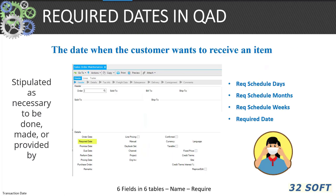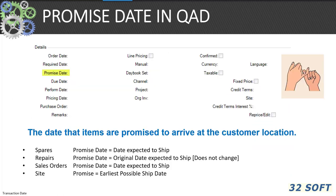Required dates in QAD are the dates stipulated as necessary to be completed by, made by, or provided by — when the customer wants to receive an item. Typical required dates in QAD include required schedule months and weeks, and required dates on sales orders and purchase orders. Promise dates are the dates an item is promised to arrive at the customer location. Examples include: spares expected ship date, repairs original expected date, OEM dates, and site promise dates — all critical to establishing commitment in the supply chain.